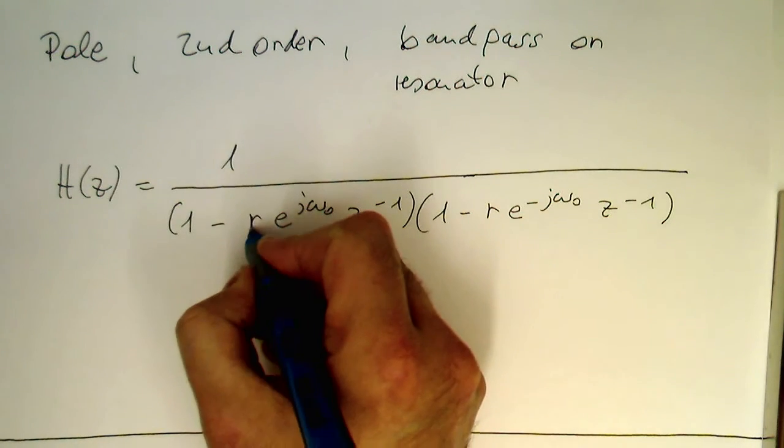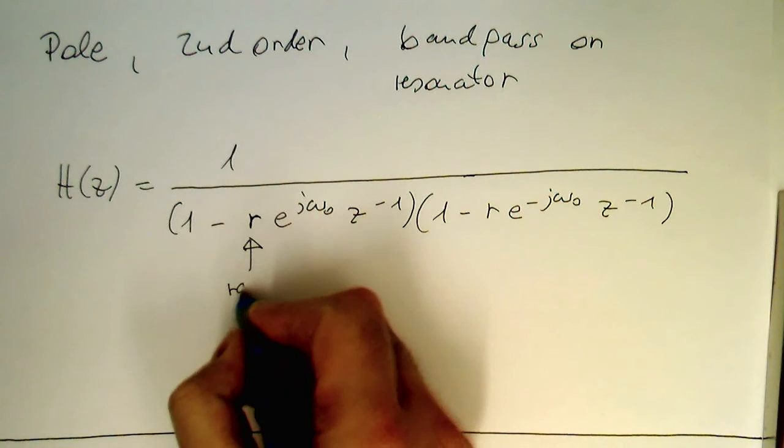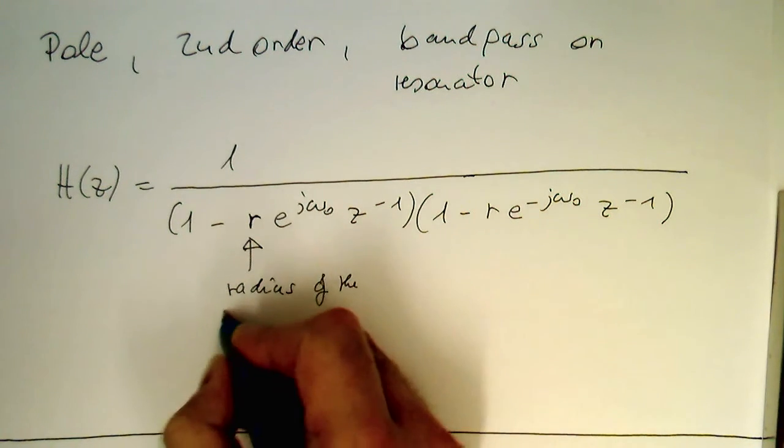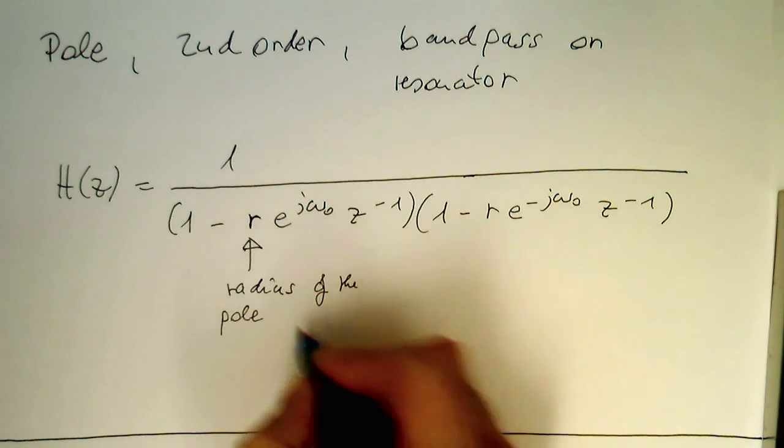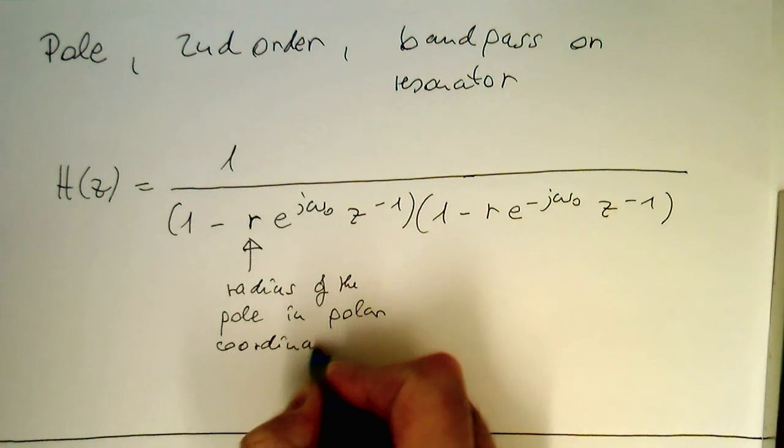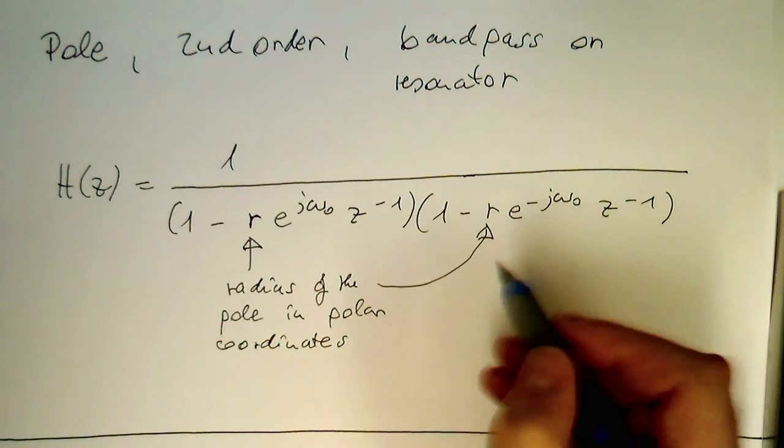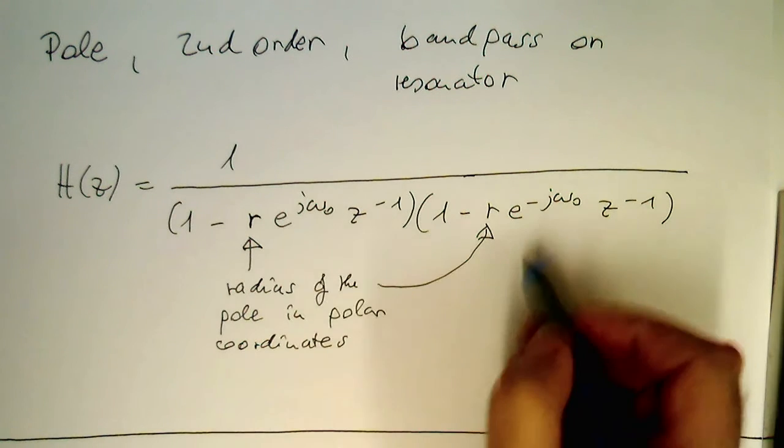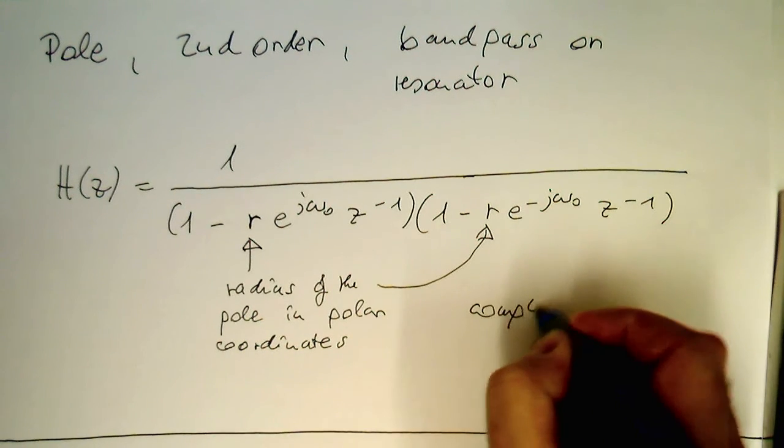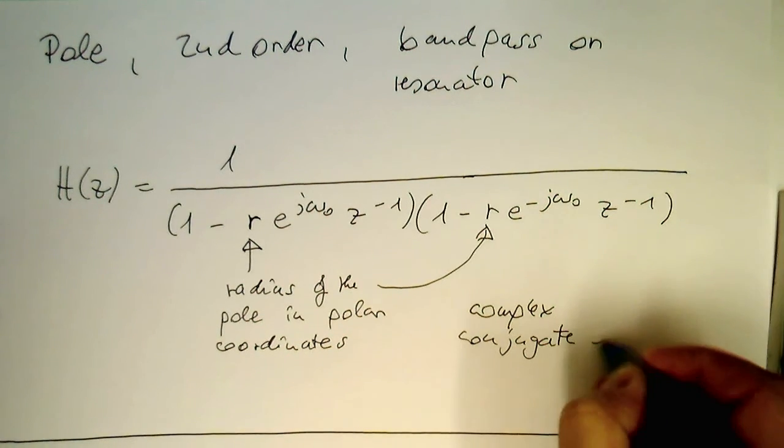Now we've got something similar to the zeros, but we've got this R here, in addition to this. So this defines the radius of the pole in polar coordinates. So we've got this also here, and still we've got here the e to j omega and e to minus j omega.